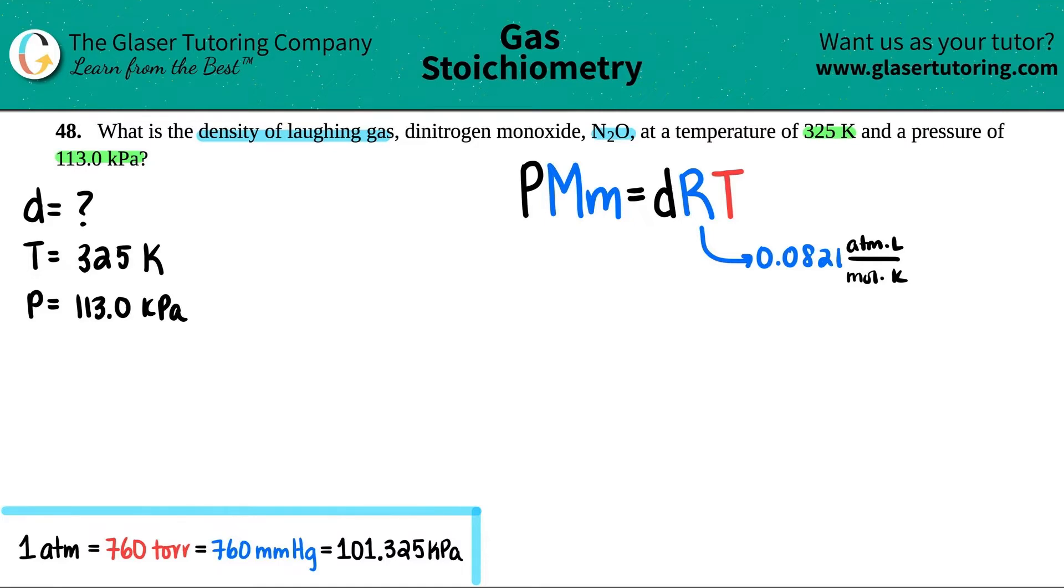So now in this case, pressure has to be in ATM. Uh-oh, kilopascal—I have to convert this into ATM. So let's just do that pretty quickly. So I have 113.0 kilopascals. We know how to convert, right? Times by ratio, throw the unit that you don't want on the bottom.